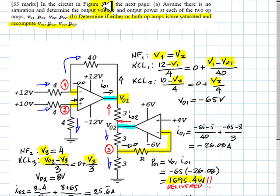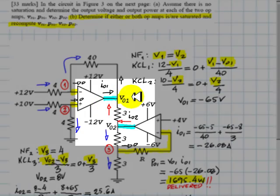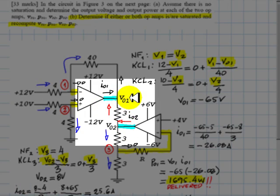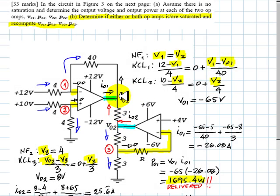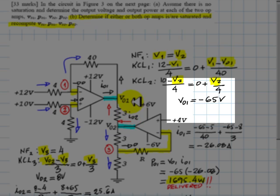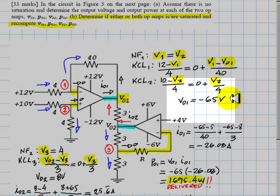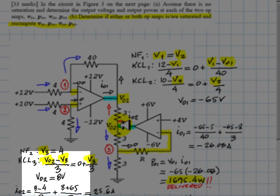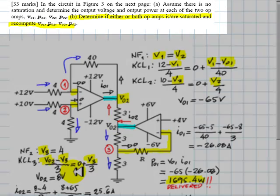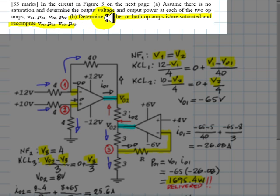In the circuit in figure below, assume there is no saturation and determine the output voltage and the output power for each of the two OPAMPs: VO1, VO2, PO1 and PO2. We did that already and found that VO1 would have been negative 65 volts and VO2, the output of the second OPAMP, would have been positive 8 volts. But the part we are about to solve is part B. Determine if either OPAMP or both OPAMPs are saturated and compute again VO1, PO1, VO2 and PO2.